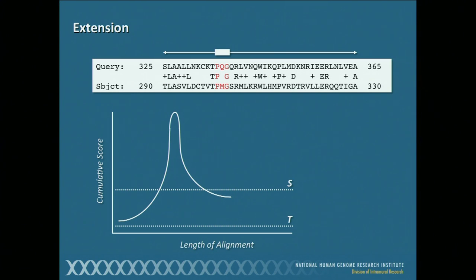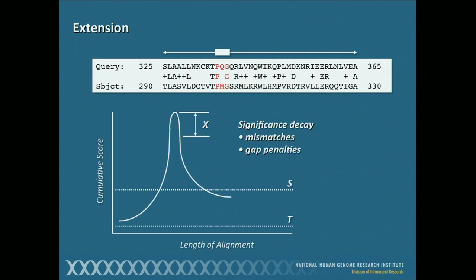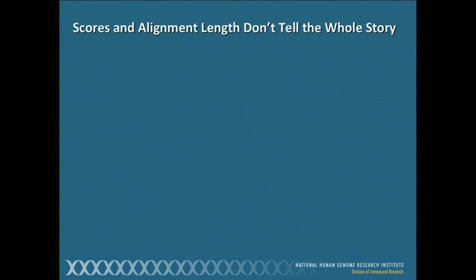We keep going up and up, going as far as we can in both directions. But at some point, imagine we're going to start mismatching more than we're matching, so the curve turns downwards as we keep subtracting points from all those negative values in the BLOSUM matrices, until we've gone a little bit too far. BLAST will tell us we've gone a little bit too far — too many mismatches, too many gap penalties — and it's time to go back to the peak. That peak is going to define the maximum length of the alignment between these two sequences.